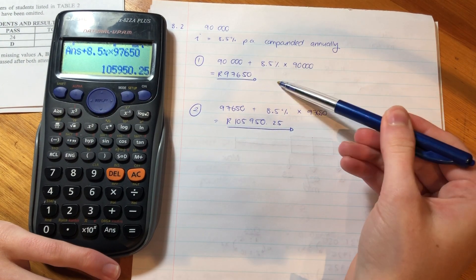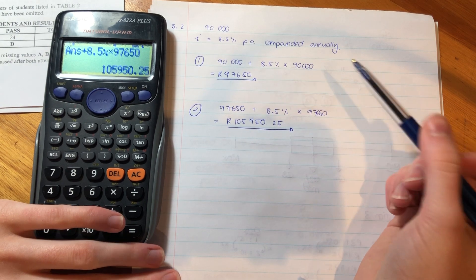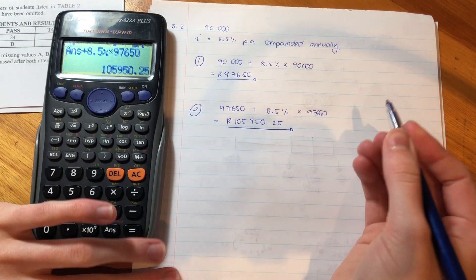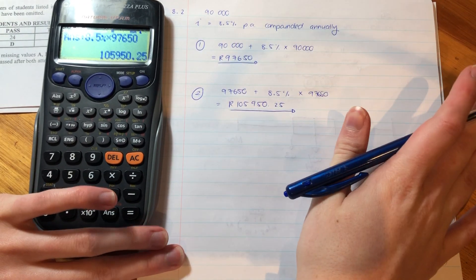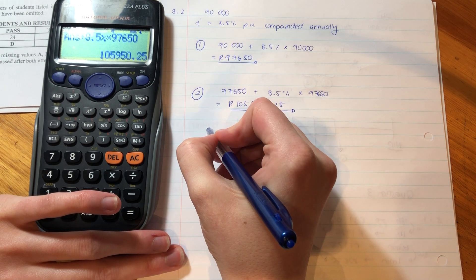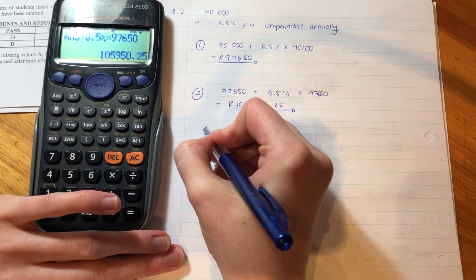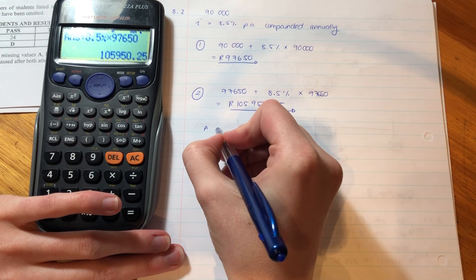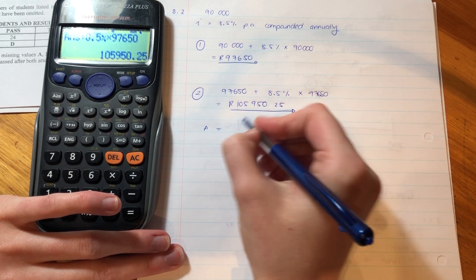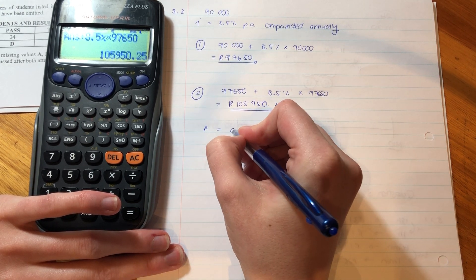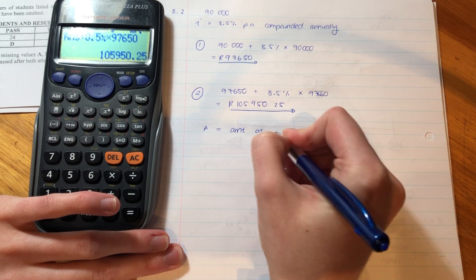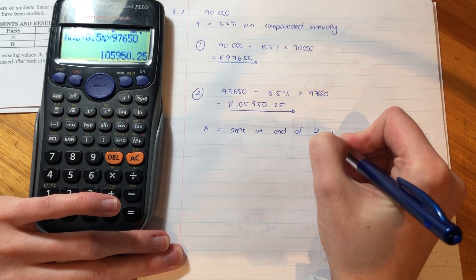So basically what I've done is I've worked it out nicely for you here, step by step. Another way you can work this out, and don't let this confuse you, the amount that we want at the end of the two years, I'm calling that A. So, A is the amount at end of two years.